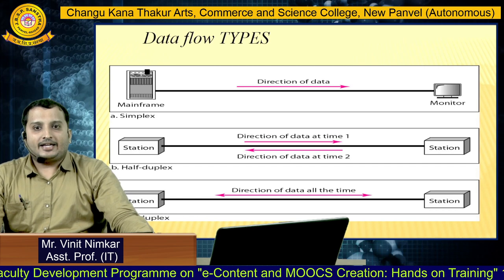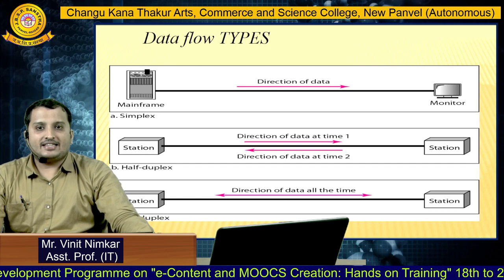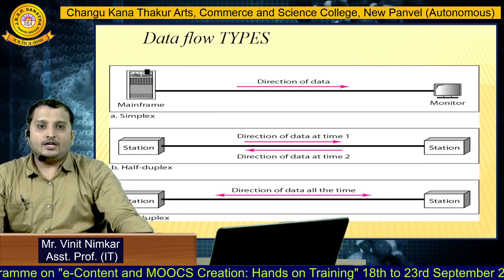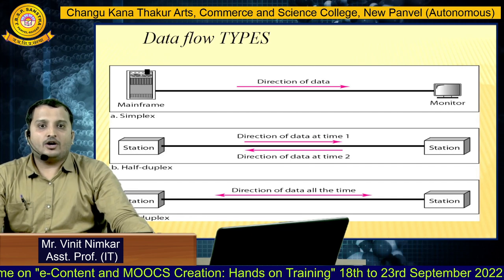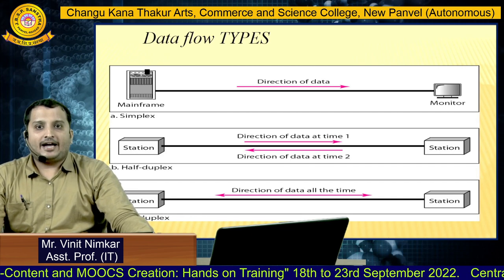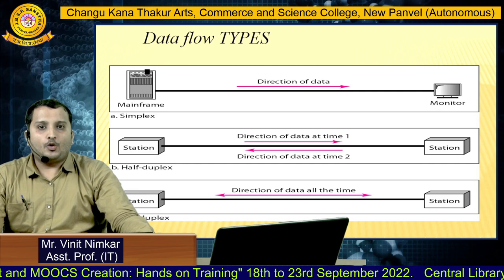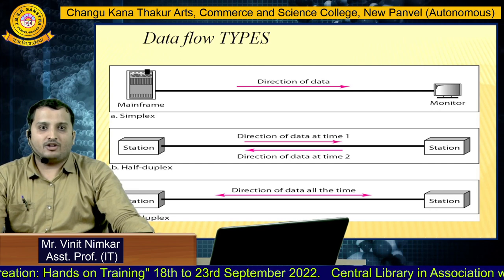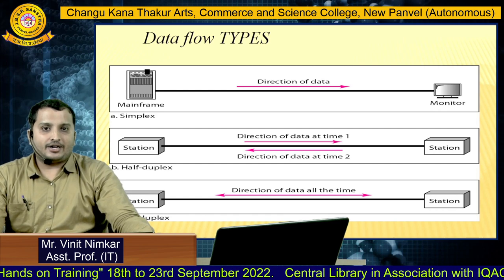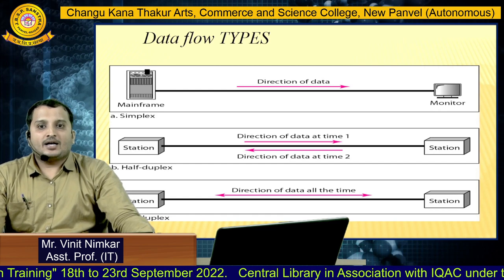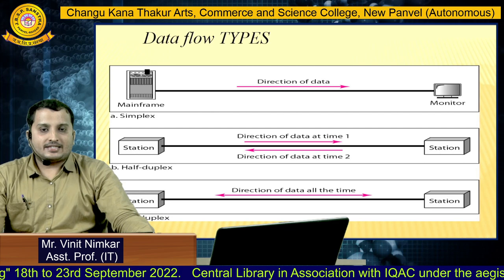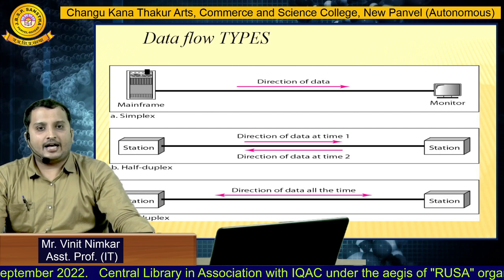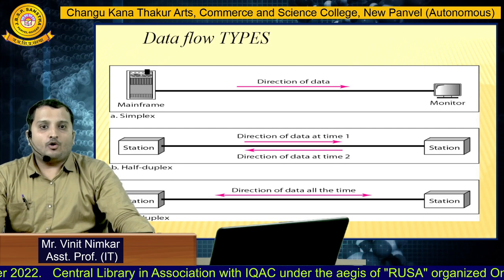Now, data flow types — there are three main types. First is simplex. As we can see in the diagram, in simplex form the direction of data is only unidirectional, meaning only the sender can send data and the other device, the receiver, can only receive it — not vice versa. Second is half duplex. In half duplex, the direction of data is in both sides but only one at a time.